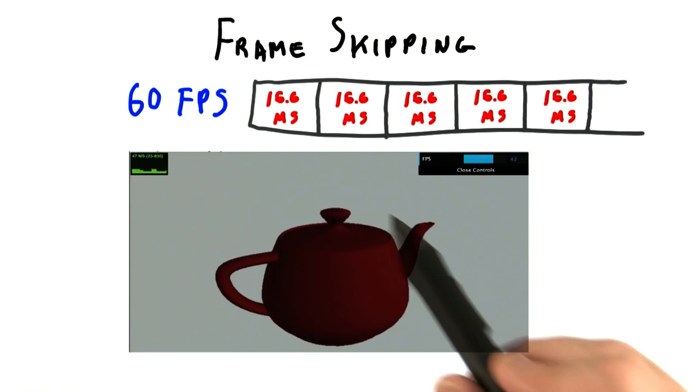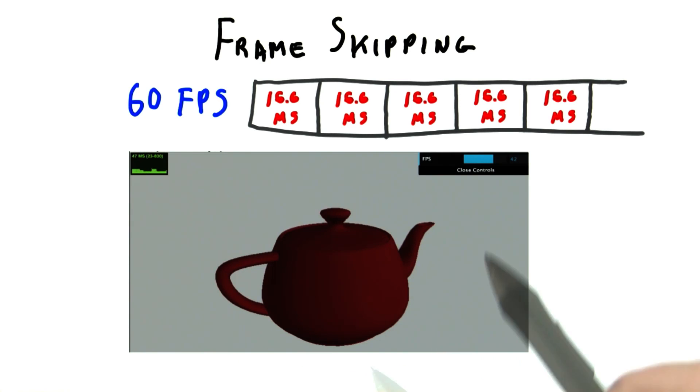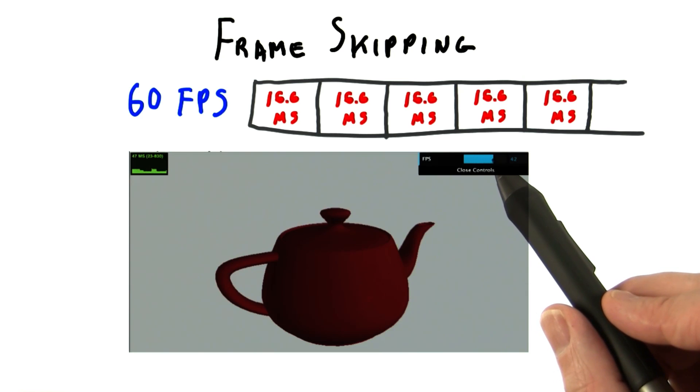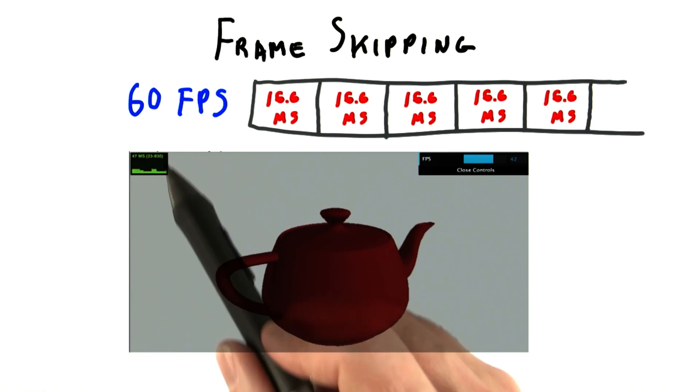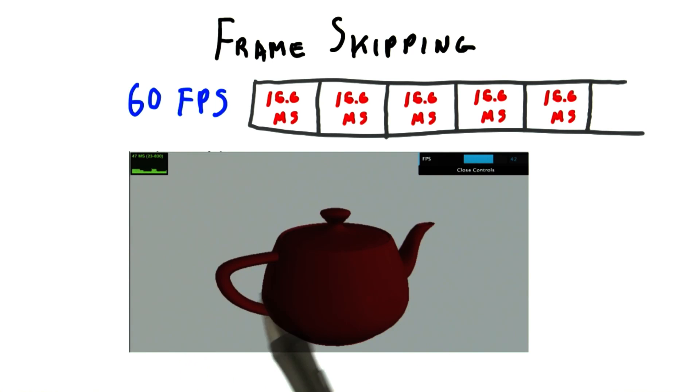If you experimented with the frames per second demo, you may have noticed something odd. If you slid the slider from 30 frames per second up to 59 frames per second, the frame rate shown in the upper left was a pretty solid 32 milliseconds per frame.